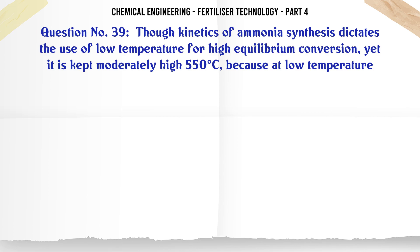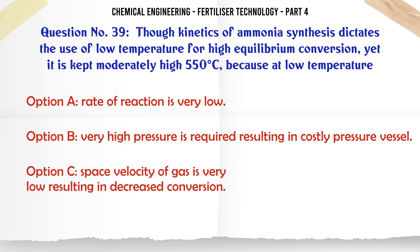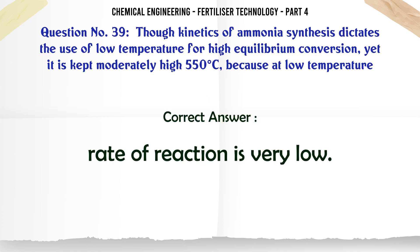Though kinetics of ammonia synthesis dictates the use of low temperature for high equilibrium conversion, yet it is kept moderately high at 550°C because at low temperature: a. rate of reaction is very low, b. very high pressure is required resulting in costly pressure vessel, c. space velocity of gas is very low resulting in decreased conversion, d. none of these. The correct answer is: rate of reaction is very low.